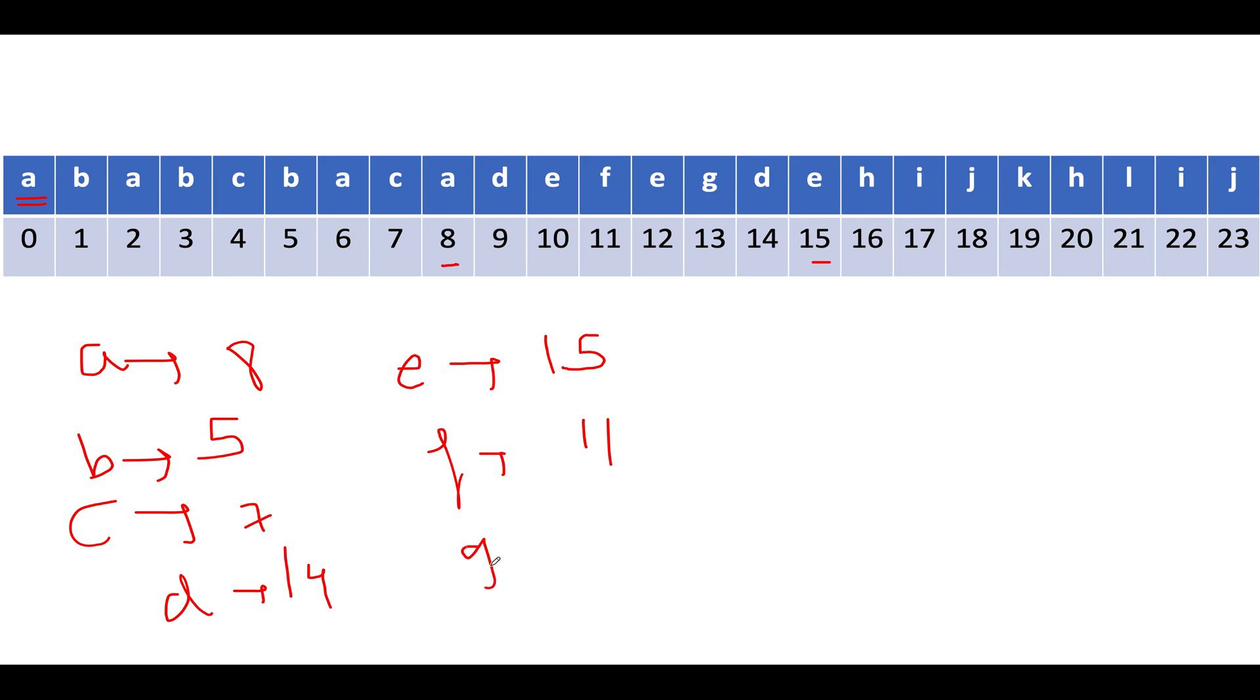These are the last indexes I'm noting down for each character. We have 'f' occurs up till 11, then we have 'g' occurs up till 13, then we have 'h' occurs up till 20, then we have 'i' occurs up till 22, 'k' occurs up till 19, and 'l' occurs up till 21.